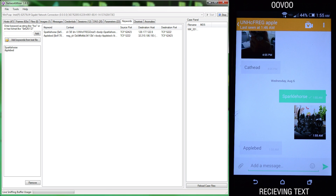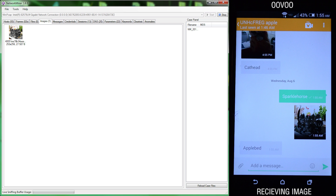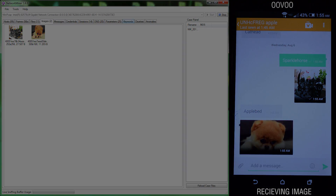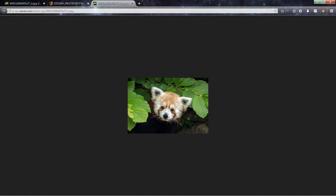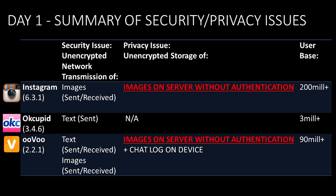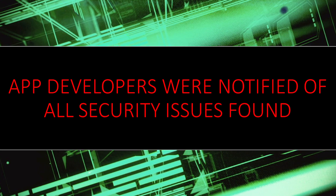We recorded network traffic in Wireshark to see if files remained on the server. For Uvu, we found an image that we sent weeks ago still on their server, unencrypted and without authentication. We'll see you next time.